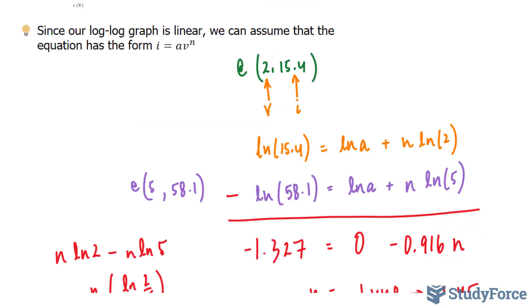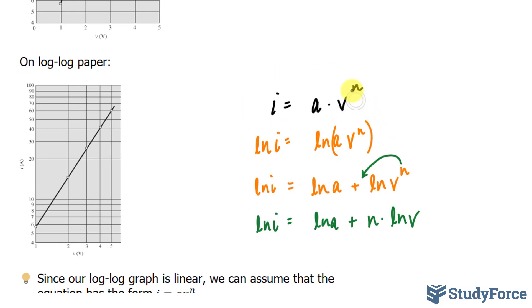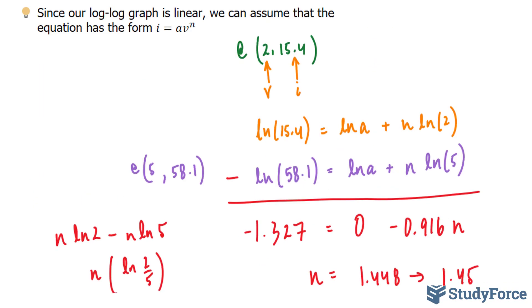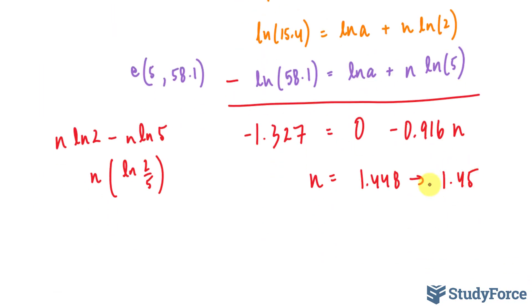We can now plug this number in to this equation. So we found our n, that's great. We need to also find our a, and we can easily do that by substituting this number into one of these equations. Let's use the first one. We have ln of 15.4 is equal to ln a plus 1.45 ln at 2.